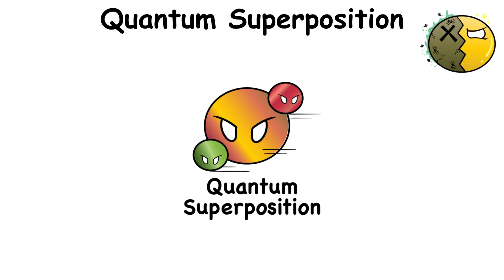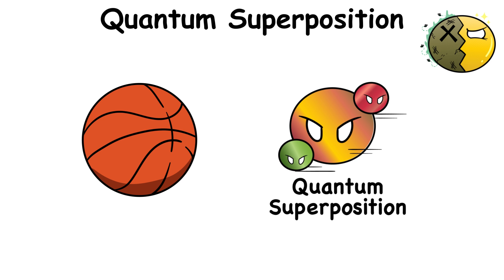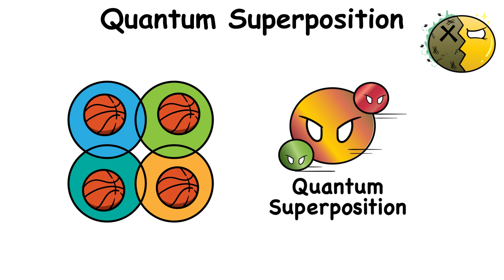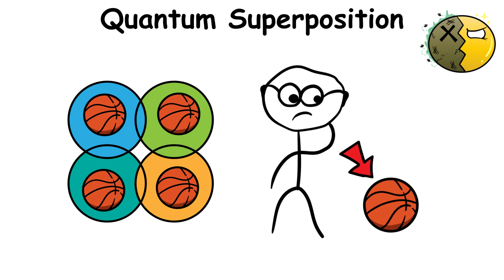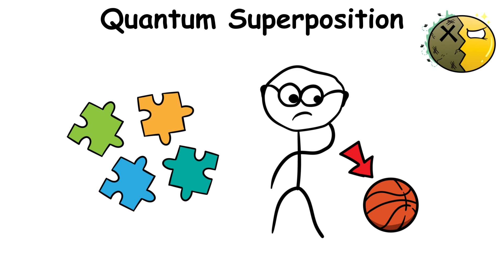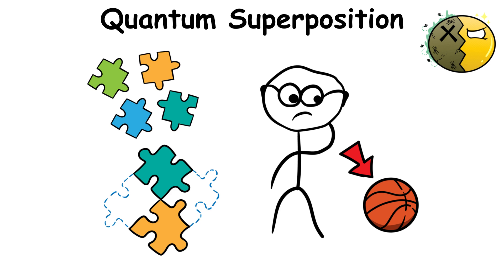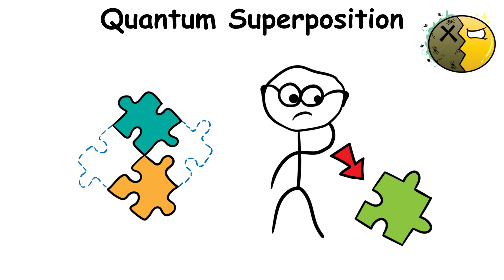Quantum superposition. Quantum superposition involves an object being in multiple states simultaneously, until we observe the object's actual state. It's like how all jigsaw puzzle pieces can be in multiple states because they can fit into any part of the picture, but it's only when you observe the pieces you know where they belong.